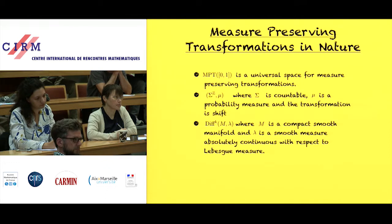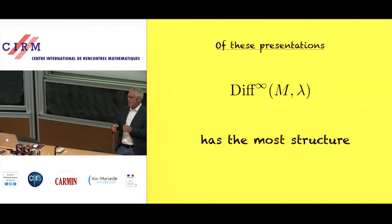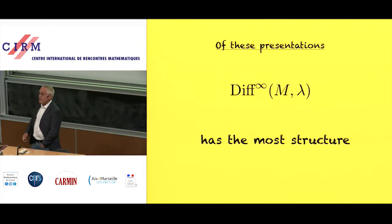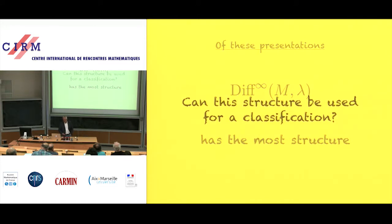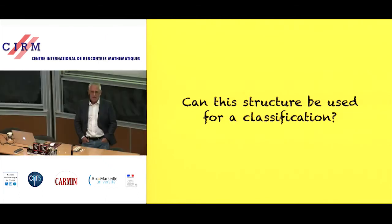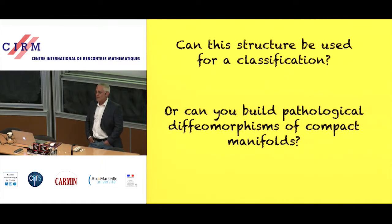Of the three, the one where you might have the best chance of having a classification is the space of diffeomorphisms, because C-infinity diffeomorphisms have the most structure. If you have a compact manifold, the collection of diffeomorphisms is much more restrictive than building an arbitrary measure-preserving transformation of the unit interval. So the question I'm going to talk about today is: can the additional structure from being the group of measure-preserving diffeomorphisms of a compact manifold be used for a classification? Or, viewed pessimistically, can you build pathological diffeomorphisms of compact manifolds systematically?